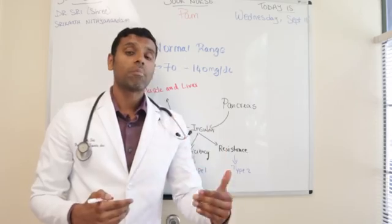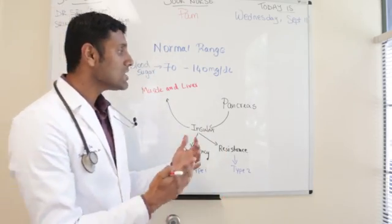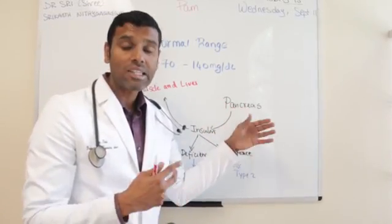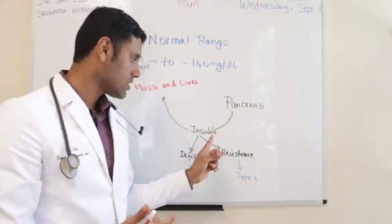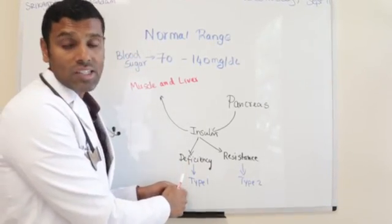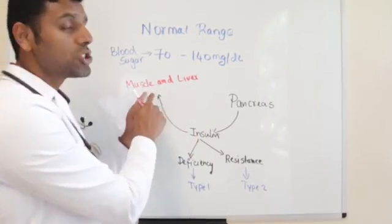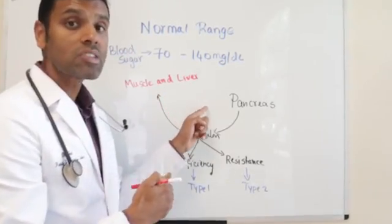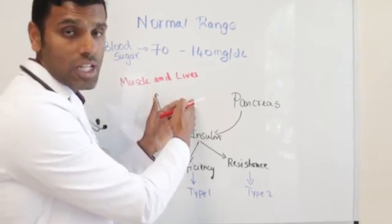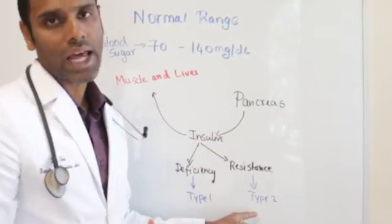When a patient presents with type 1 diabetes, antibodies are attacking the cells that secrete insulin from the pancreas, causing insulin deficiency — that's type 1 diabetes. But if insulin is not able to act on the muscle and liver properly — that is, resistance to the action of insulin in the muscle and liver — that's what we call type 2 diabetes.